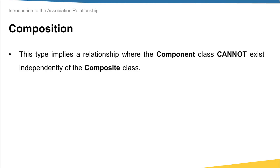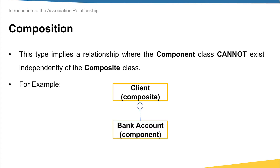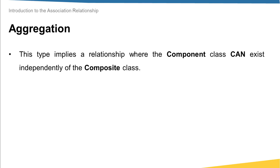First, let's talk about composition. In this relationship, the component class cannot exist independently of the composite class. For example, assume we have a software for the banking industry with two classes: one for client and one for bank account. A person becomes a client because it opens a bank account inside the bank, so the bank account object cannot exist independently of the client object.